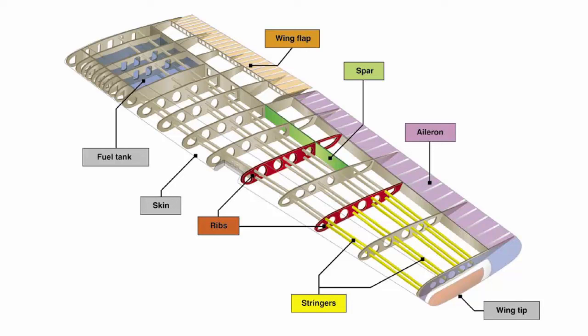Attached to the rear or trailing edges of the wings are two types of control surfaces, referred to as ailerons and flaps. Ailerons extend from about the midpoint of each wing outward to the tip and move in opposite directions to create aerodynamic forces that cause the airplane to roll. Flaps extend outward from the fuselage to near the midpoint of each wing and are normally flush with the wing surface during cruising flight. When extended, the flaps move simultaneously downward to increase the lifting force of the wing for takeoffs and landings.